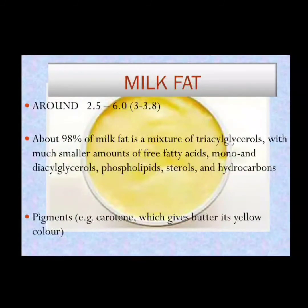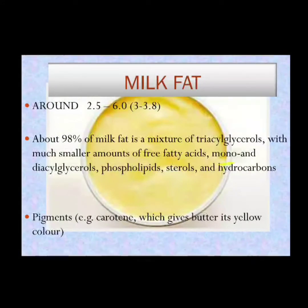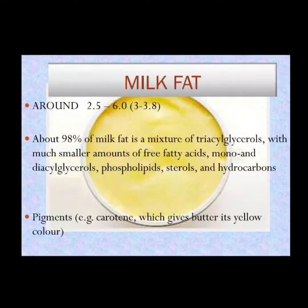The presence of milk fat depends on various factors. Milk fat ranges from 2.5 to 6 percent, with the precise amount being around 3 to 3.8 percent. About 98 percent of the fat content is basically triglycerides, along with monoglycerides and diacylglycerols. Apart from that, phospholipids, sterols, and hydrocarbons are also part of the fat content. The fat content and pigments like carotene also contribute to the color of milk.